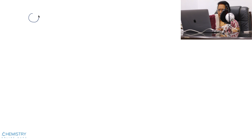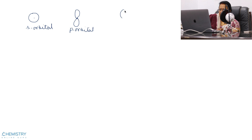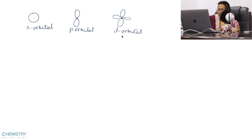The shape of s orbital is spherical, as shown here. The shape of p orbital is dumbbell, like this. The shape of d orbital is double dumbbell, like this. You can see the shape of f orbital in the article on shell, subshell and orbital at chemistryonline.guru.